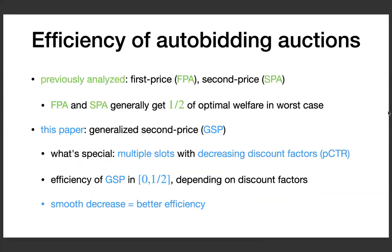So what's in this paper? What we have known before this paper is the efficiency of the first price auction and second price auction, both of which are very common auction formats. Here, efficiency is measured by the ratio between the worst case welfare generated by the auction and the optimal welfare. What we know is that FPA and SPA both achieve one half of the optimal welfare in the worst case, so they are pretty competitive — the competitive ratio, which is the ratio between the worst case welfare and the optimal welfare, is a constant of one half.